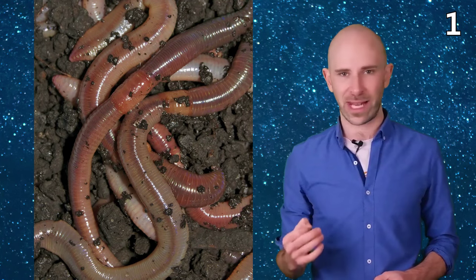Number 1. According to research done at the Rothamsted Experimental Station, depending on soil quality, there can be anywhere from 250,000 to 1.75 million earthworms per acre of land.